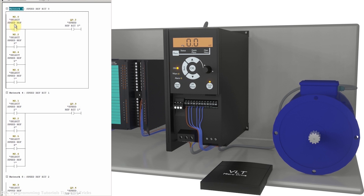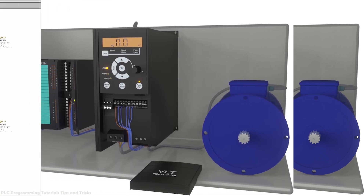In network 3, turning on bit M2.0 activates output Q0.2 (speed reference bit 0) and the VFD loads preset frequency 1 — 2.5 Hz. Turning on M2.1 activates Q0.3 (speed reference bit 1) and the VFD loads preset frequency 2 — 5 Hz. Turning on M2.2 activates both bit 0 and bit 1; their sum is 3, loading preset frequency 3 — 7.5 Hz. Similarly, bits M2.3 through M2.6 load the fourth through seventh preset frequency references.